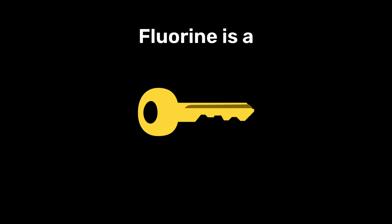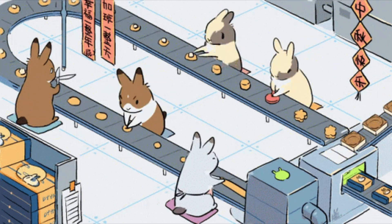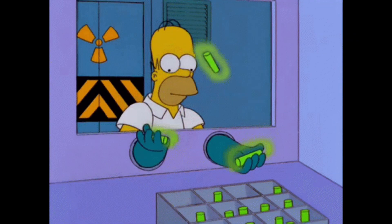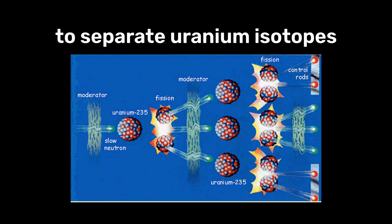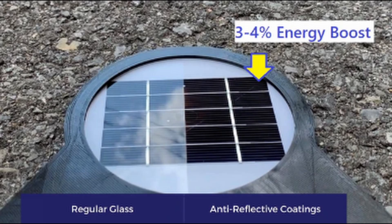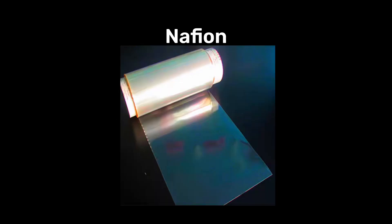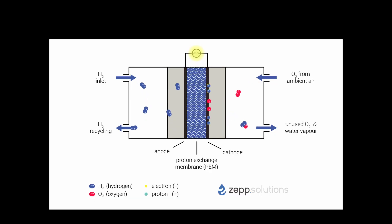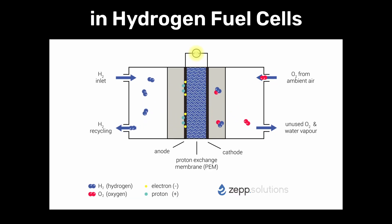Fluorine is a key component in the manufacturing of uranium hexafluoride, which is needed by the nuclear power industry to separate uranium isotopes. Fluorine-based materials are also often used in the anti-reflective coatings used to improve solar panel efficiency, and fluoropolymers like Nafion are used as proton exchange membranes in hydrogen fuel cells.